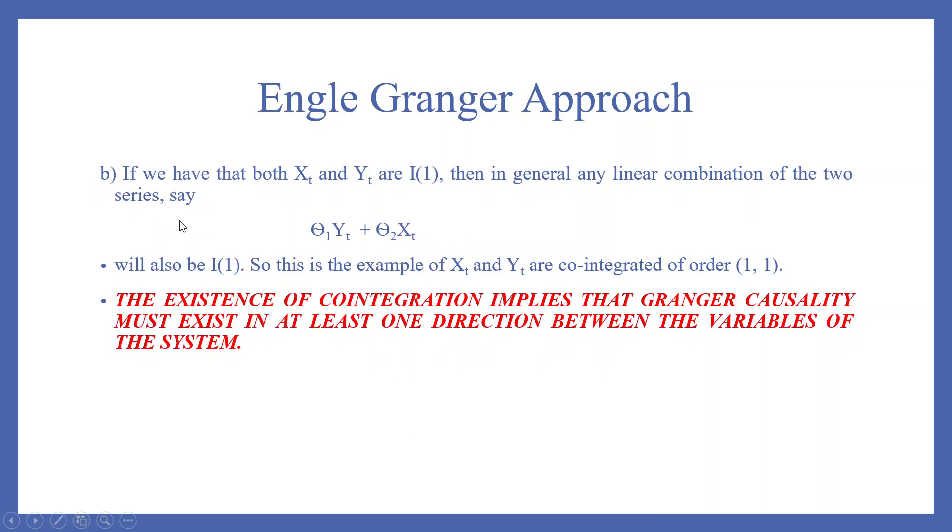The second case, if we have both XT and YT are I1, then in general, any linear combination of the two series, say theta 1YT plus theta 2XT, will also be I1. So this is the example of XT and YT are cointegrated of the order 1, 1. The existence of cointegration implies that the Granger causality must exist in at least one direction between the variables of the system.